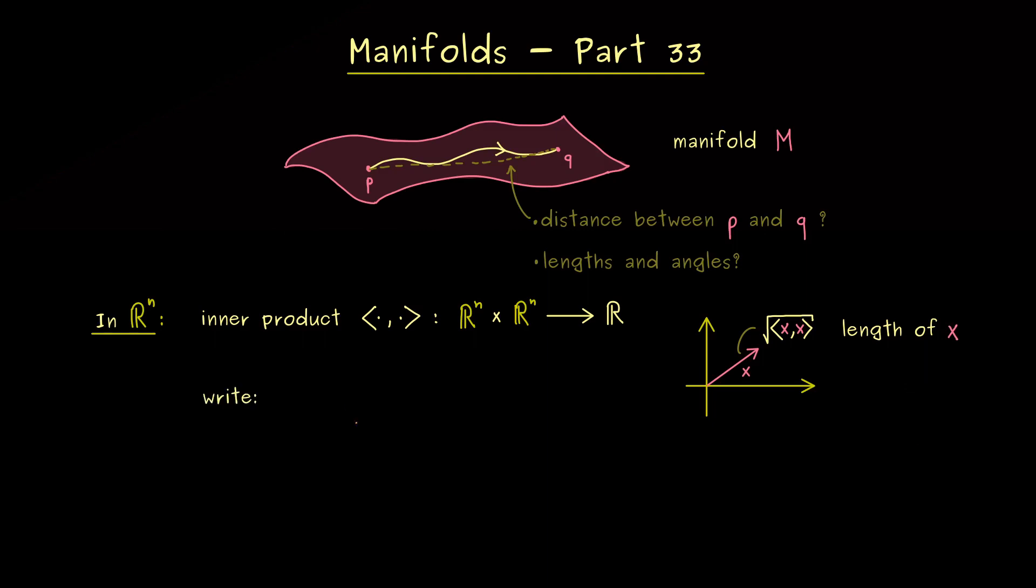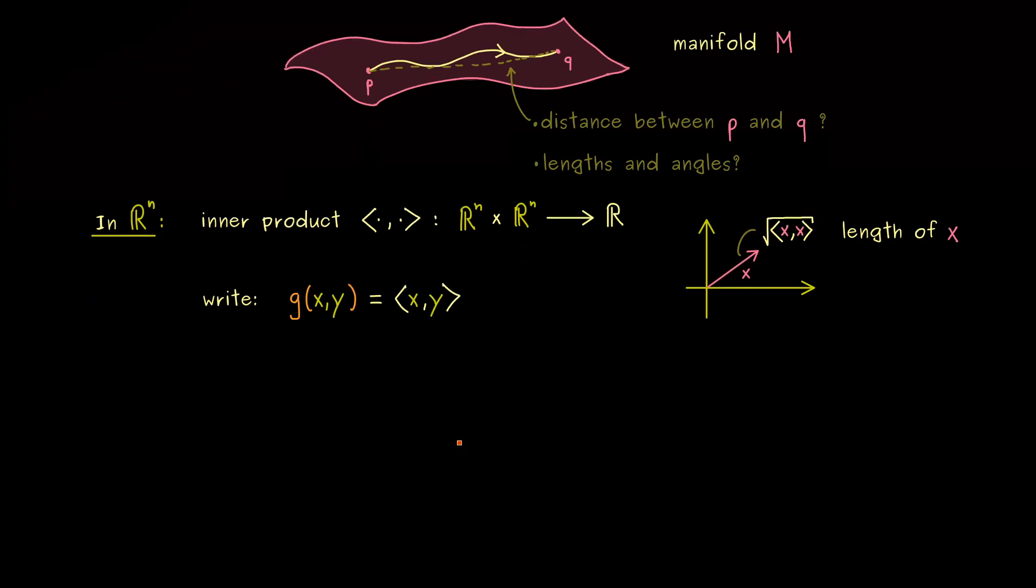Now in the context of manifolds, we usually use a lowercase g to denote an inner product. So instead of the pointed brackets x,y we would just use g of x and y. Okay, with that I would say we are ready for the definition of a Riemannian manifold.